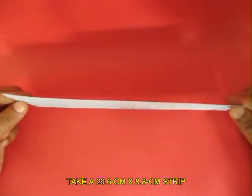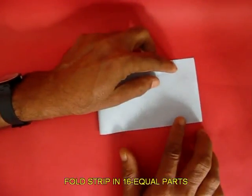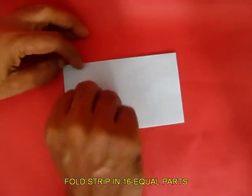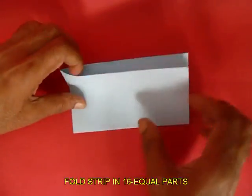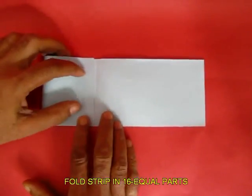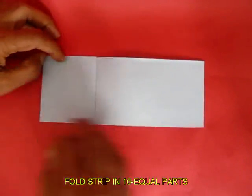Here is the rectangular strip of paper. First you need to fold this strip into 16 equal parts. Fold the midline, then bring the short edges to the midline to fold the quarter lines.